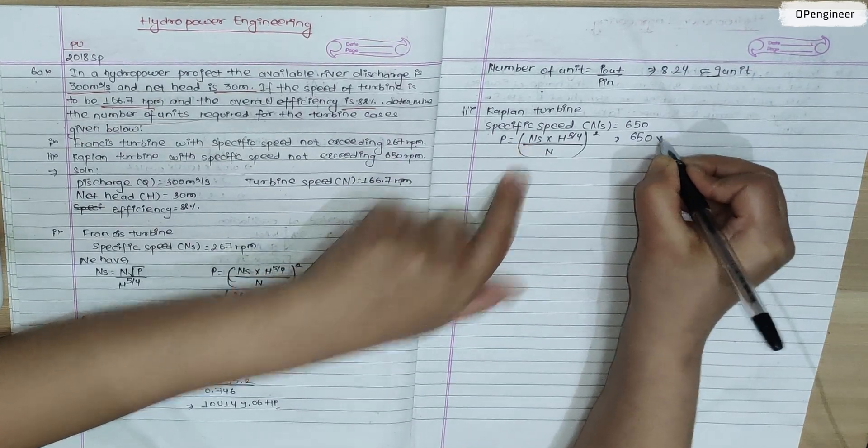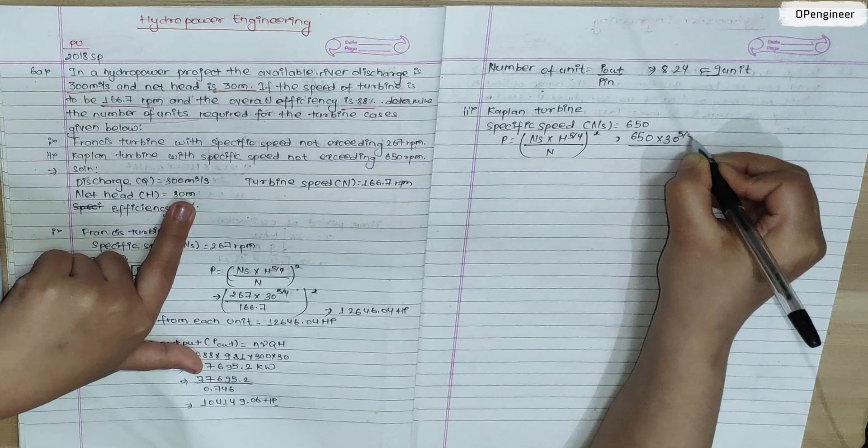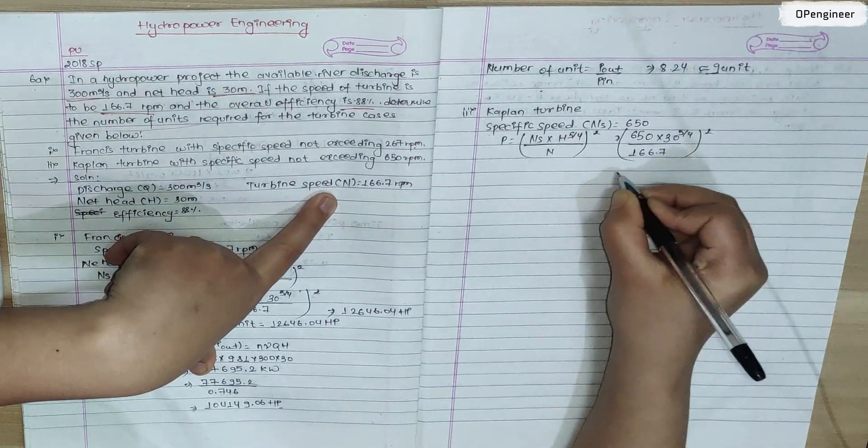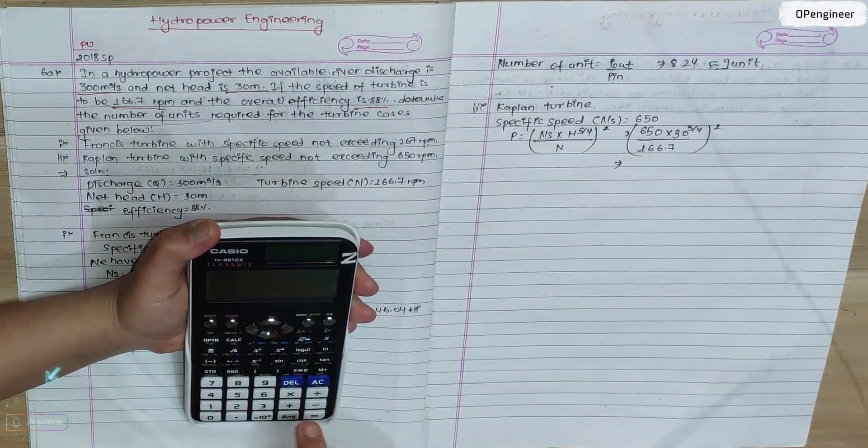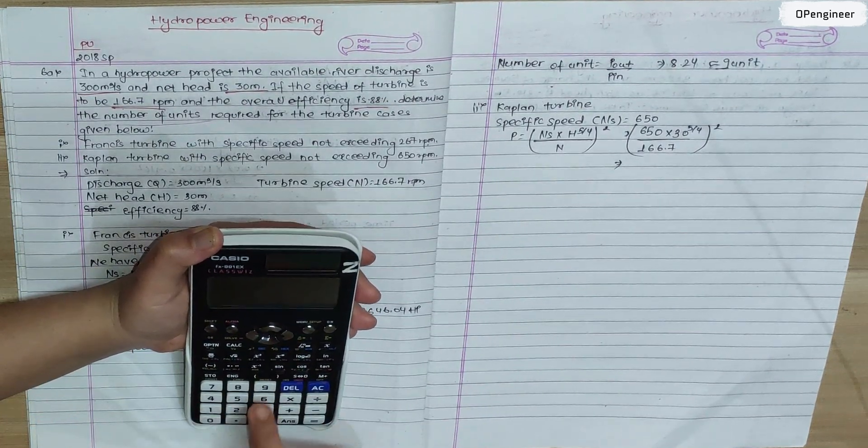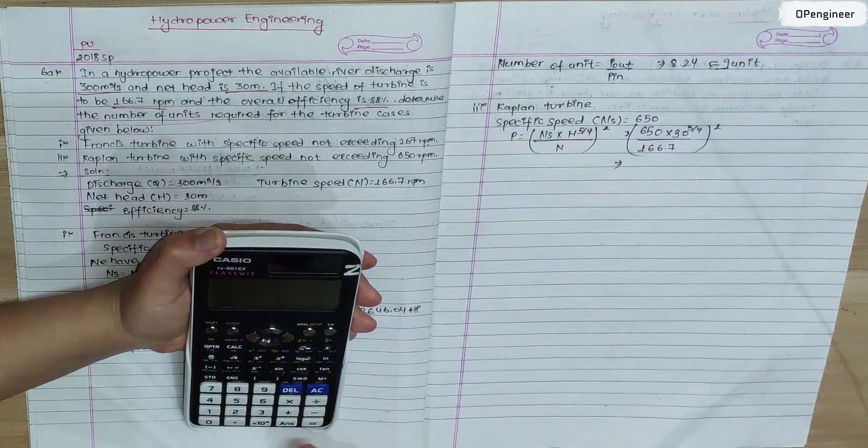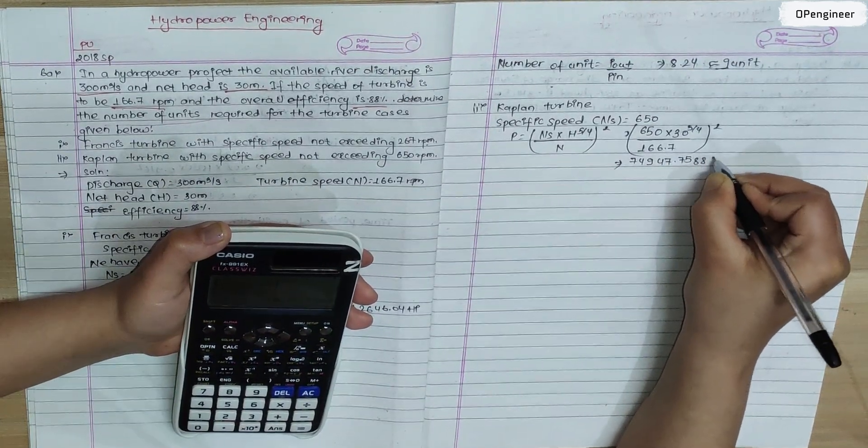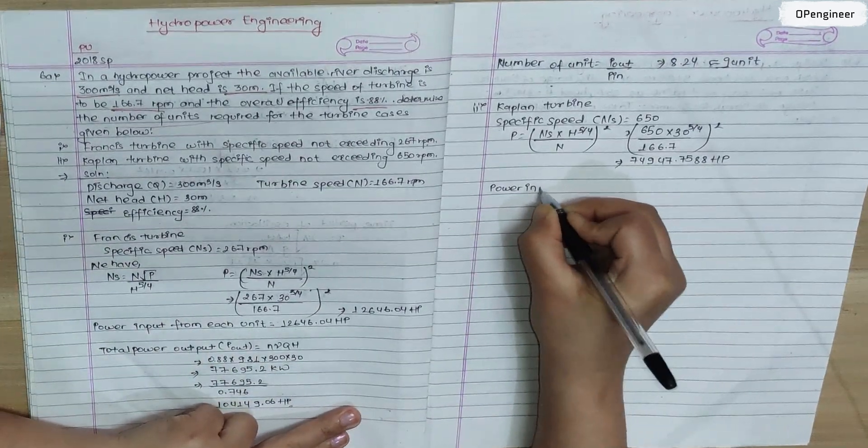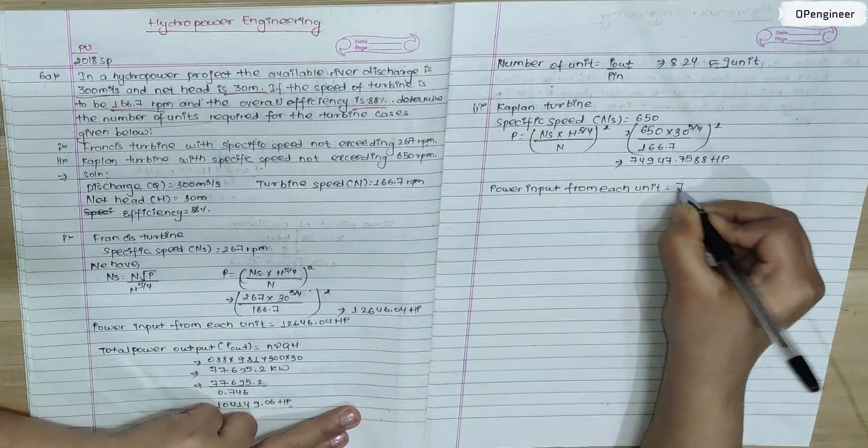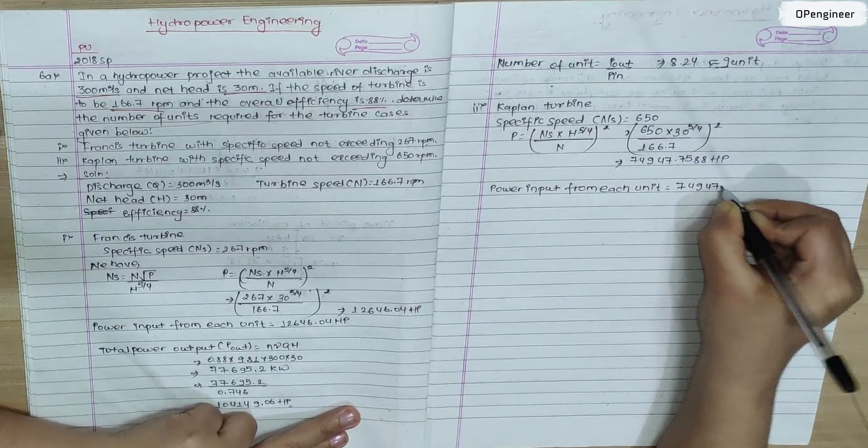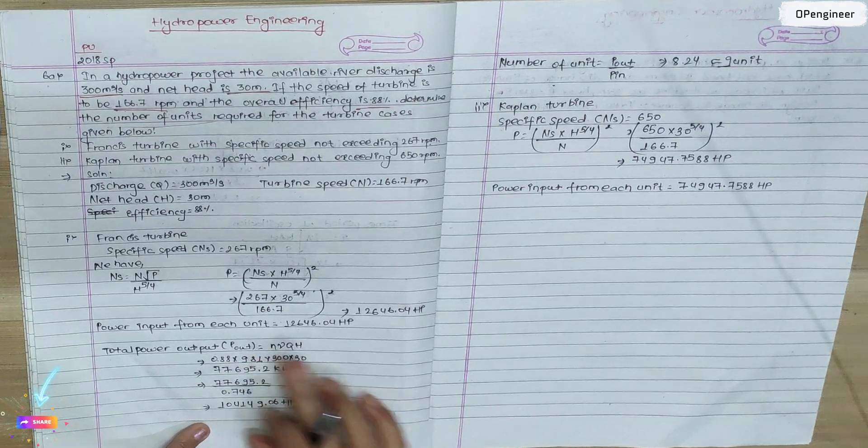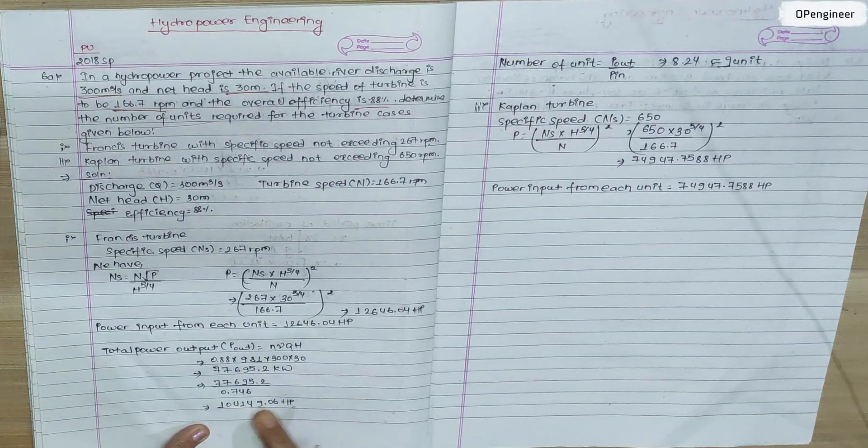For Kaplan turbine, specific speed is 650 rpm. Using the same formula: 650 times square root of P divided by 30 to the power 5 by 4 equals 166.7 whole square. Calculating: 650 into 30 power 5 by 4 divided by 166.7 whole square equals 74947.7588 horsepower. This is the power input for Kaplan turbine. The output power remains 104149.06 horsepower.